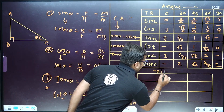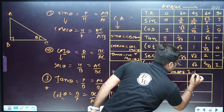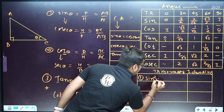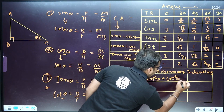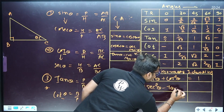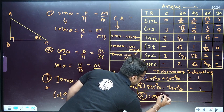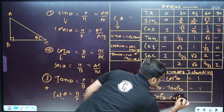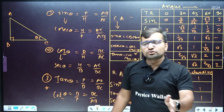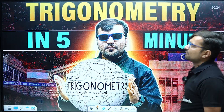Now the three most important trigonometric identities — very useful for future math. First: sin²θ + cos²θ = 1. Second: sec²θ − tan²θ = 1. Third: cosec²θ − cot²θ = 1. That covers everything about trigonometry. I hope you are getting it well. Thank you so much.